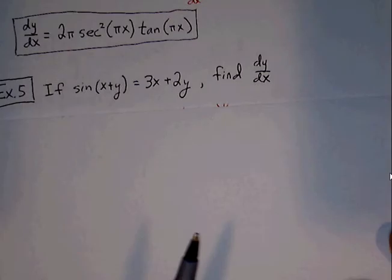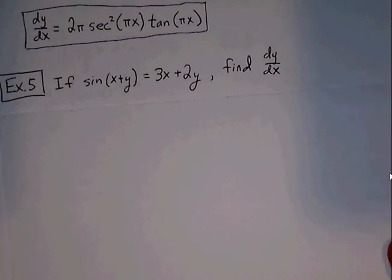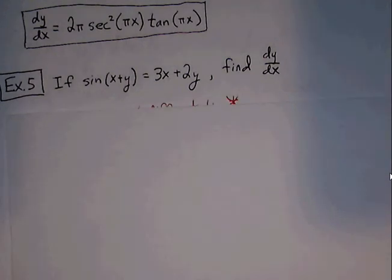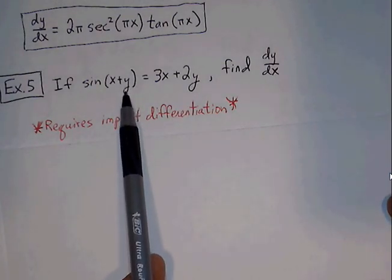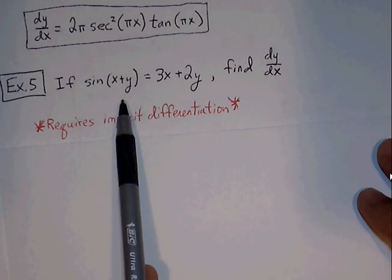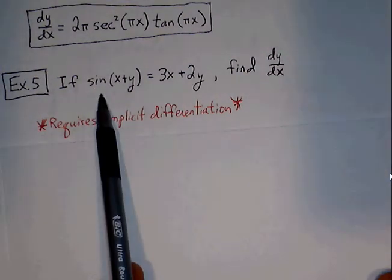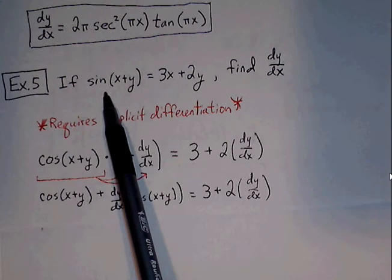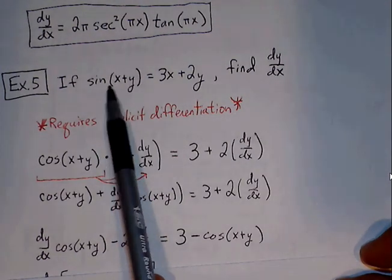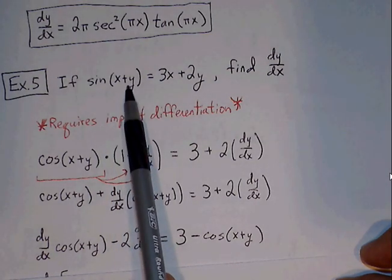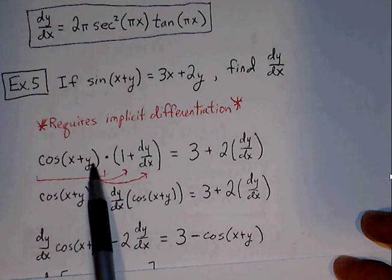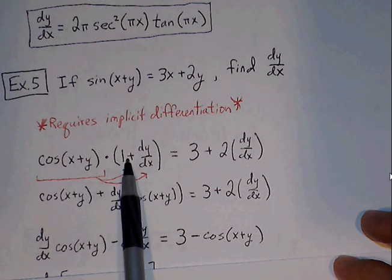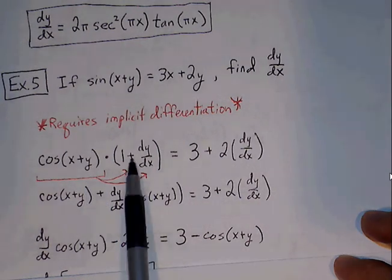Example 5: if sine of x plus y is equal to 3x plus 2y, find dy over dx. Here we have to go through implicit differentiation — the x's and y's are defined implicitly, mixed into the equation. We go through each function and apply the appropriate derivative rules. For sine of u, the derivative is cosine of u times u prime. The u value is x plus y, so we get cosine of x plus y times u prime. The derivative of x is 1 and the derivative of y is 1, but every time we differentiate y, we attach dy/dx.